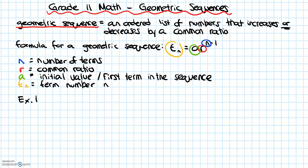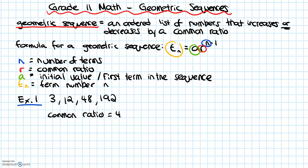Example one. Here we have the sequence 3, 12, 48, and 192. Our common ratio is 4, so r equals 4. The reason the common ratio is 4 is because to get the next number in the sequence we multiply by 4: 3 times 4 is 12, 12 times 4 is 48, 48 times 4 is 192, and so on. Our initial value — the first term in the sequence — is 3, so a equals 3.